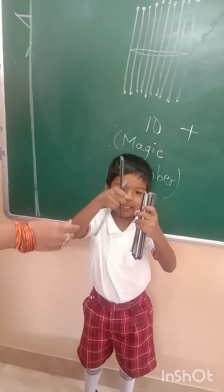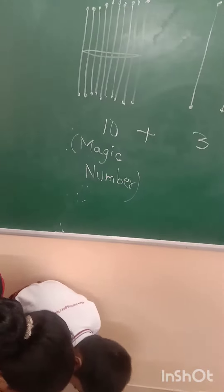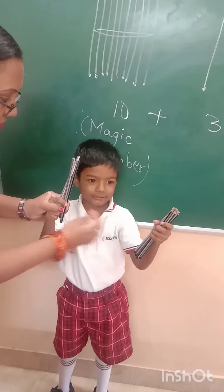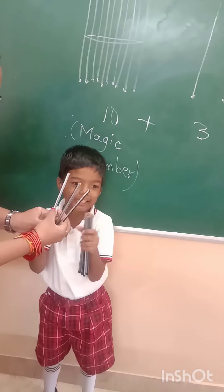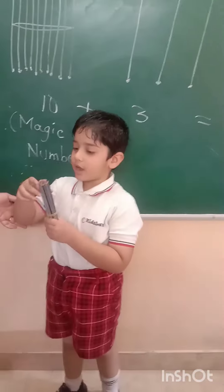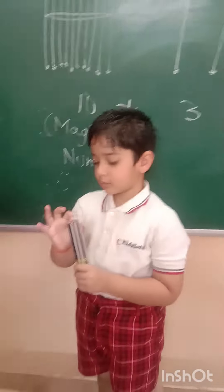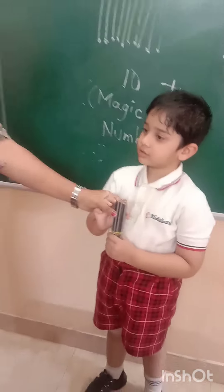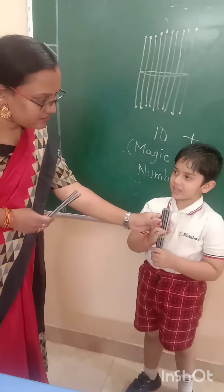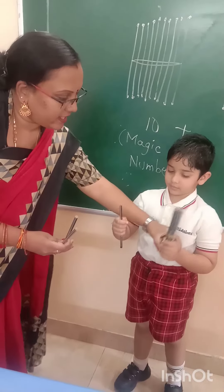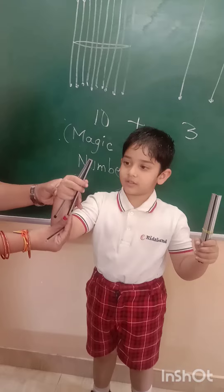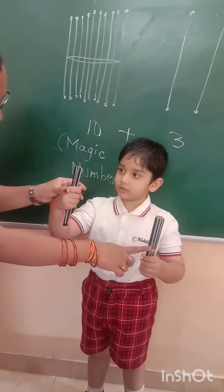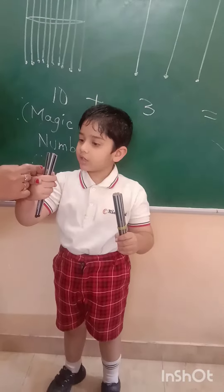Show me 13. 10, 11, 12, 13. Yes, very good. Now Agya, come. Count — 1, 2, 3, 4, 5, 6, 7, 8, 9, 10. What is 10? Magic number. Show me 11 — 10, 11. Show me 12 — 10, 11, 12. Show me 13 — 10, 11, 12, 13. Very good. Clap hands for Agya.